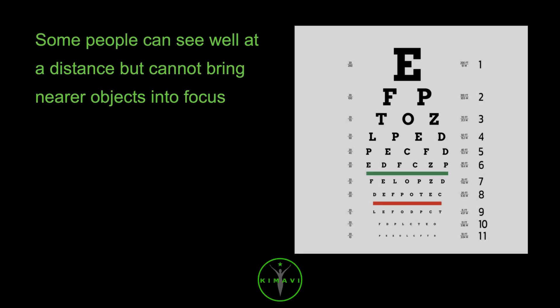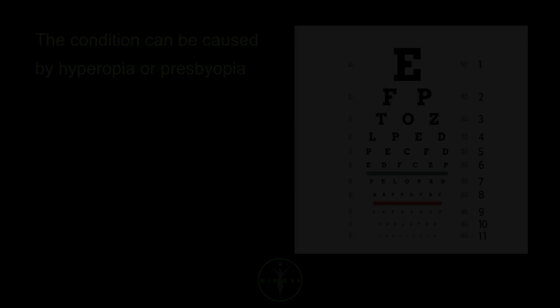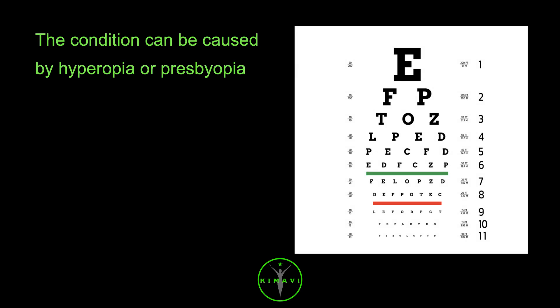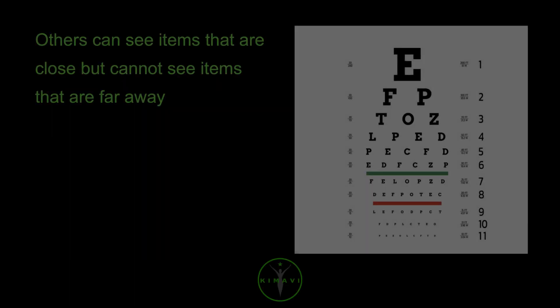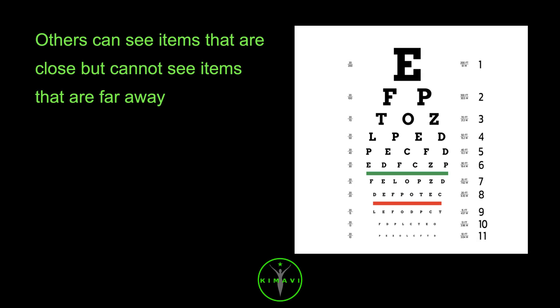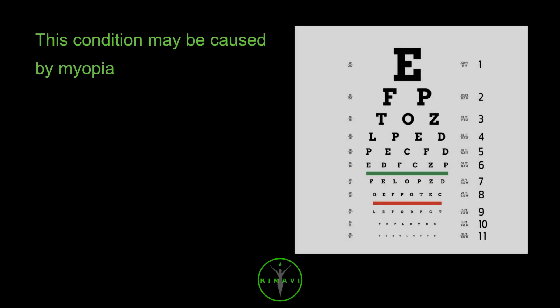Some people can see well at a distance but cannot bring nearer objects into focus. This condition can be caused by hyperopia or presbyopia. Others can see items that are close but cannot see items that are far away. This condition may be caused by myopia.